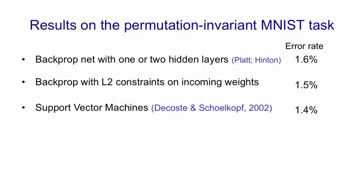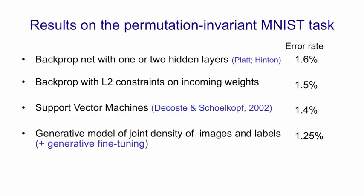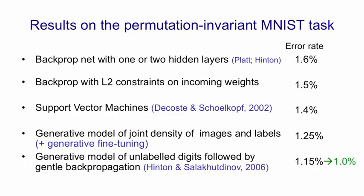If you pre-train a network using a stack of Boltzmann machines and then fine-tune it to be better at generating the joint density of digits and image labels, you can get down to 1.25%. If you train a stack of Boltzmann machines and simply put a 10-way softmax on top and fine-tune it, you can get to 1.15%, and with more tuning, down to about 1%. So you can do a lot better than standard back propagation and also better than support vector machines by using generative pre-training followed by discriminative fine-tuning.